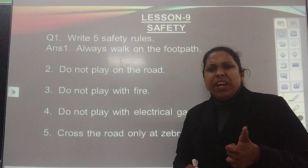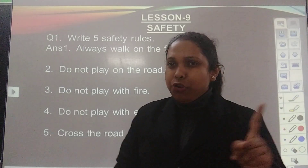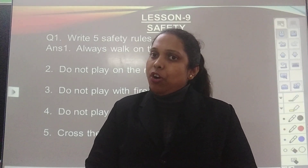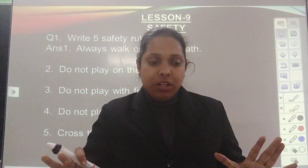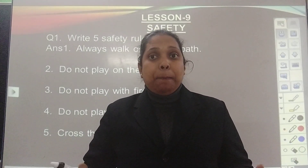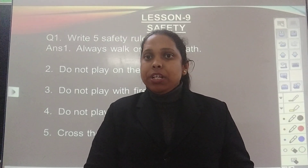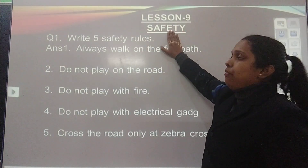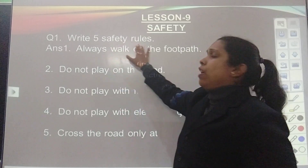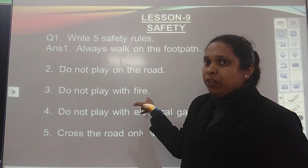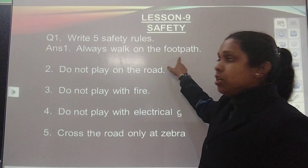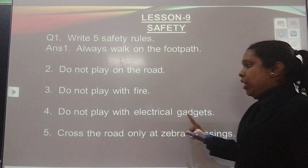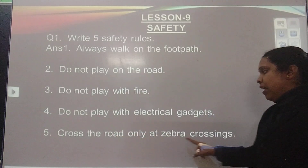Now the writing part comes — very less writing. Only one big question and some one-word answers. Book work is over — with this we finish the full complete book, the last chapter. Now let's come to the copy work. In the first line write lesson number 9, Safety. First question: write 5 safety rules — always walk on the footpath, do not play on the road, do not play with fire, do not play with electrical gadgets, cross the road only at zebra crossing.